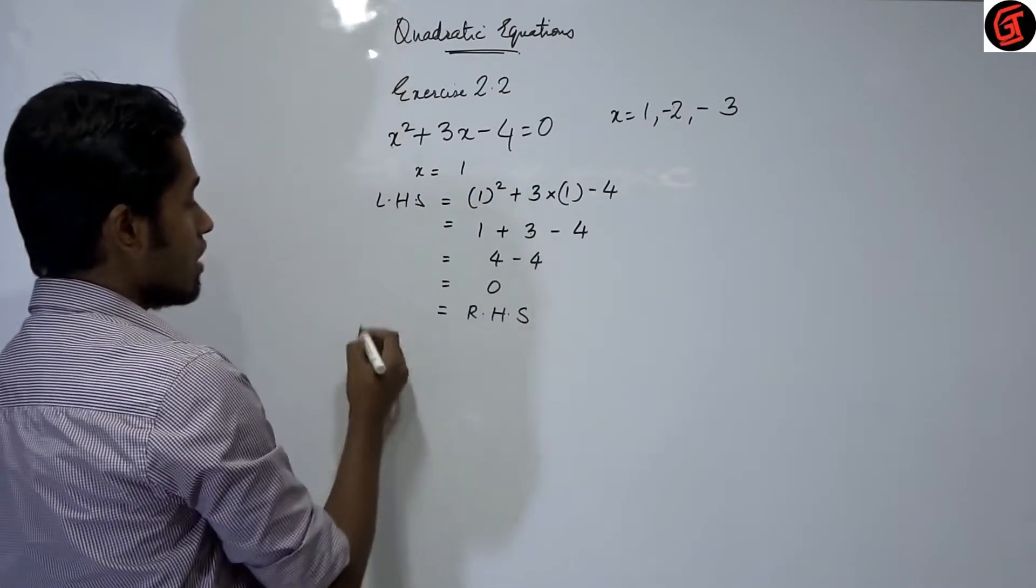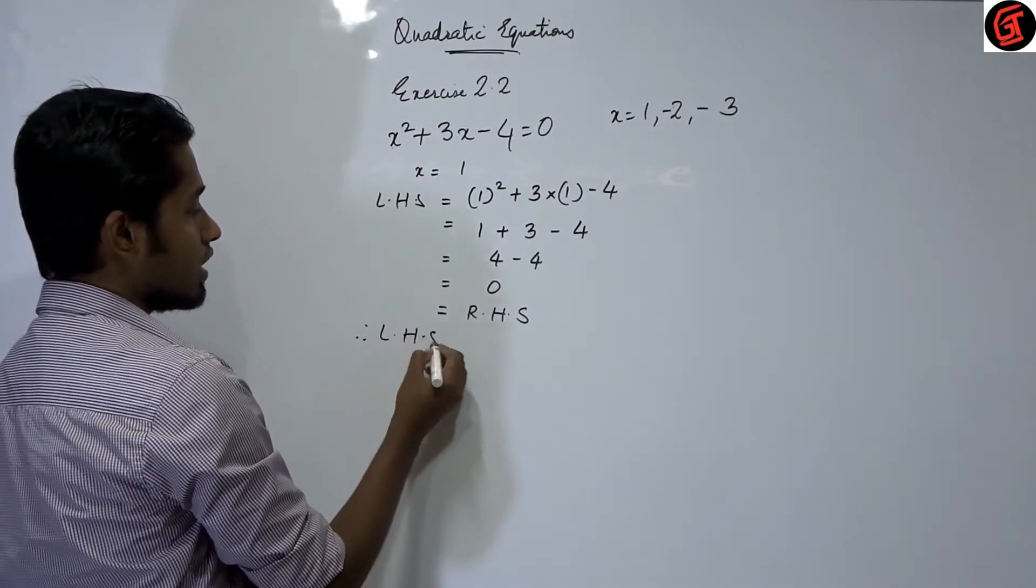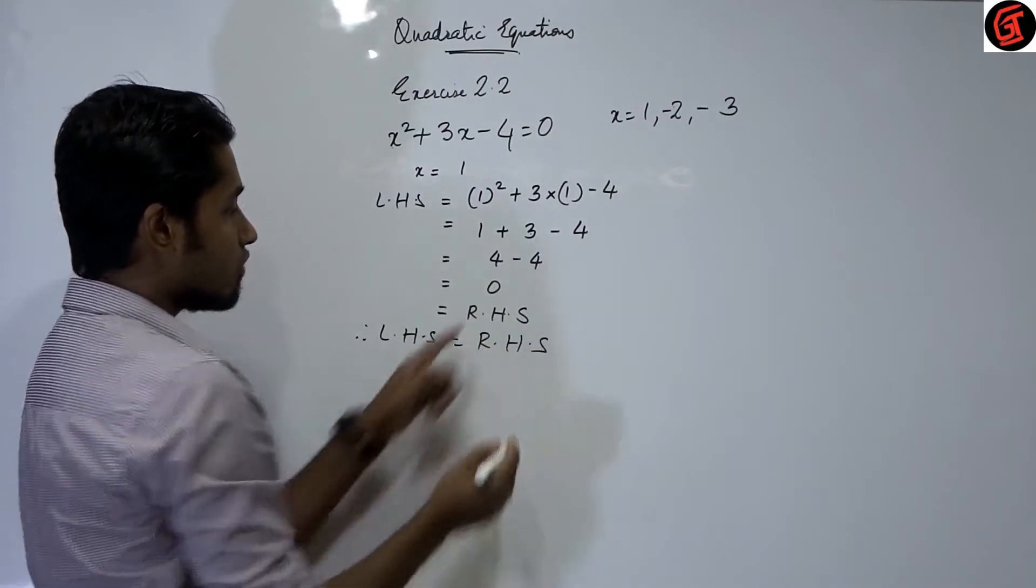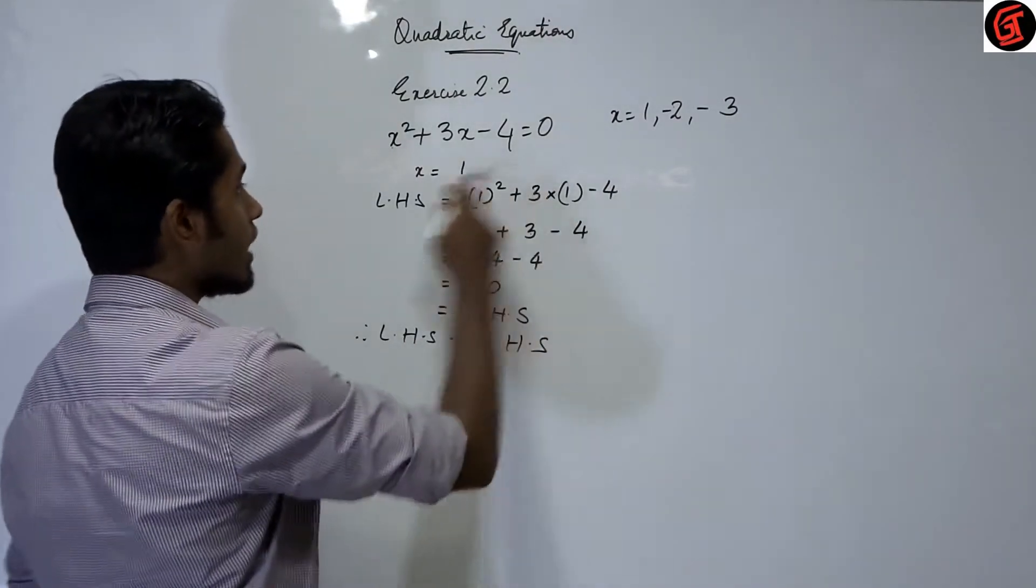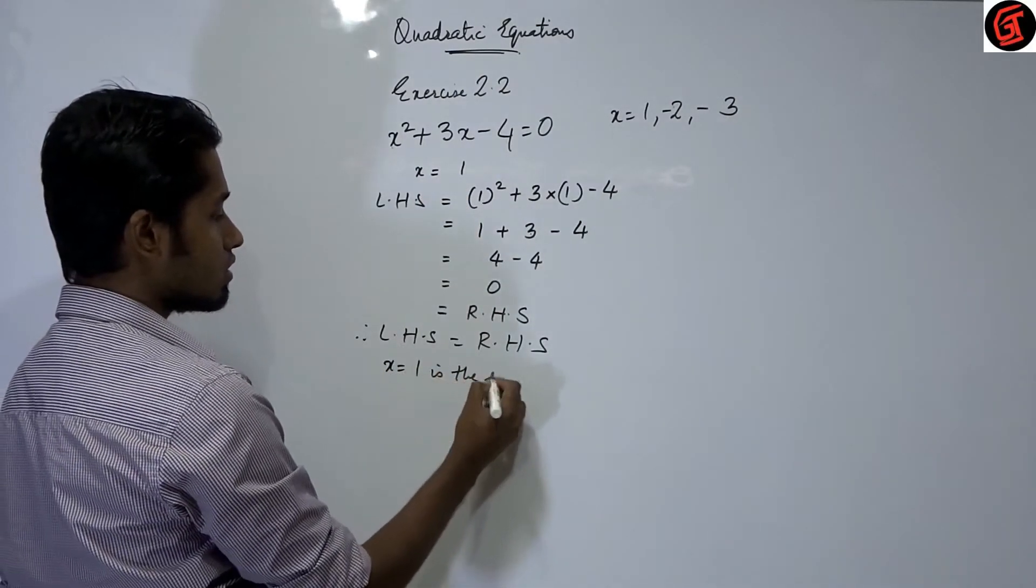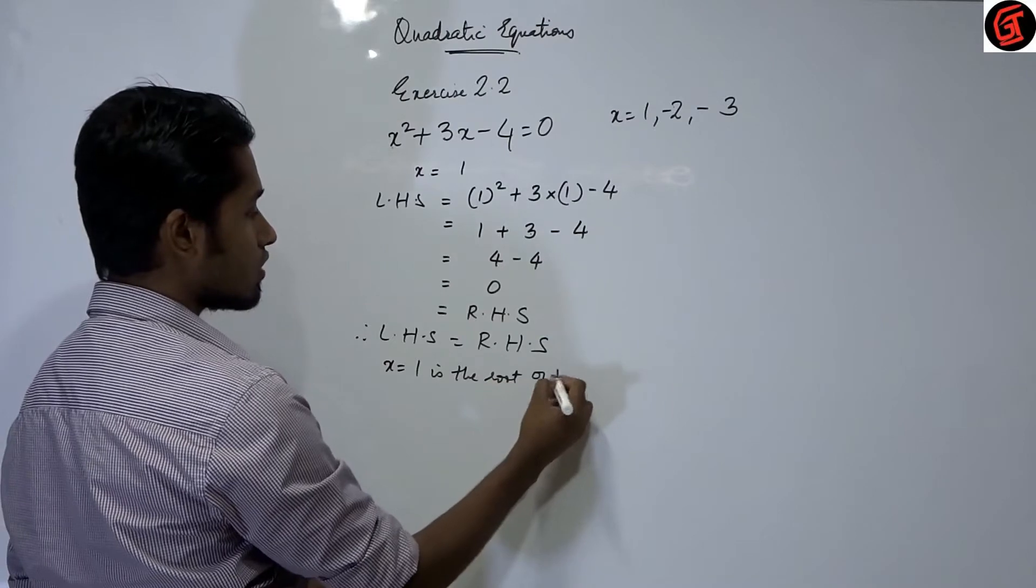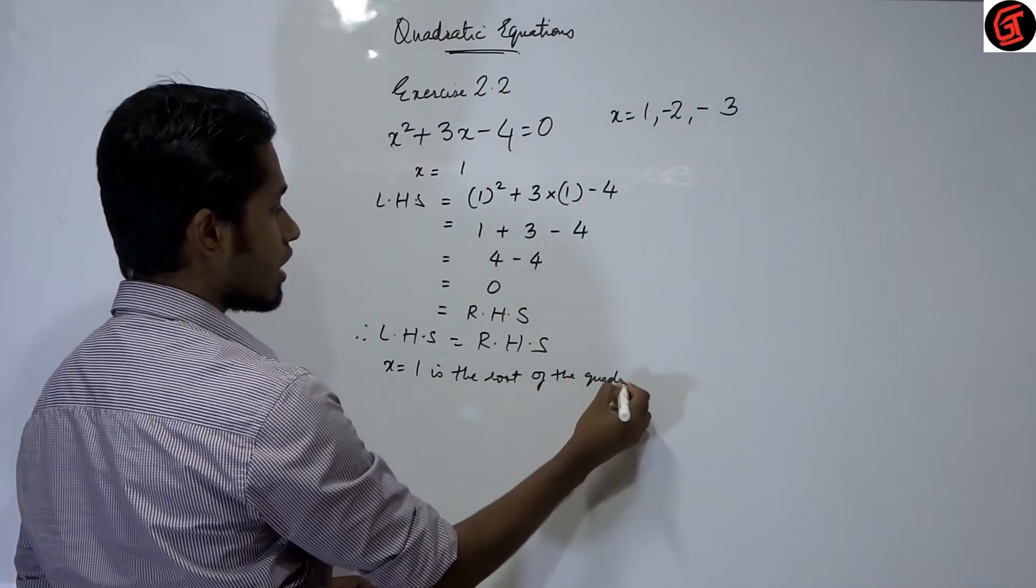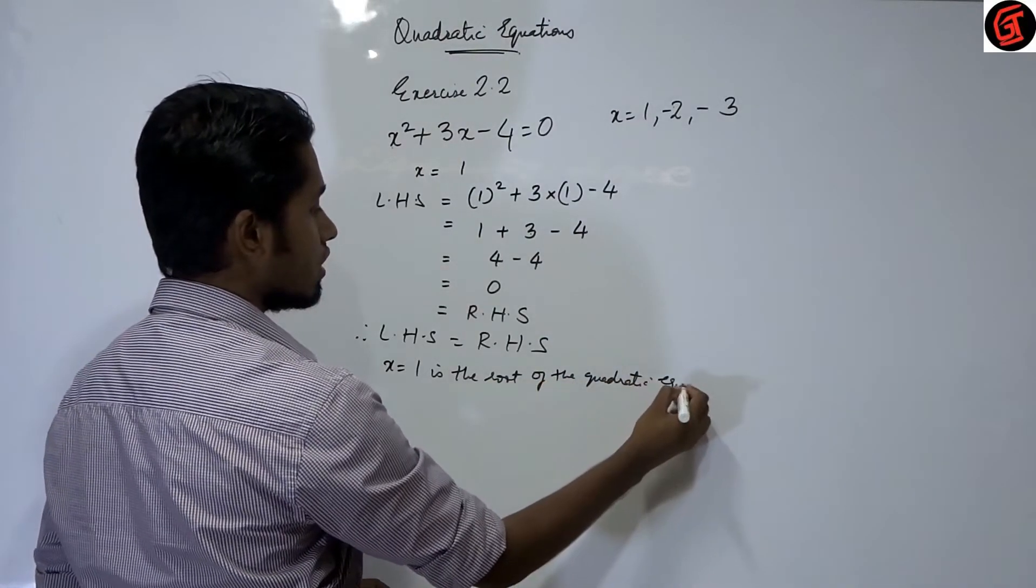This is equal to RHS. Therefore LHS is equal to RHS. Therefore x is equal to 1 is the root of the quadratic equation.